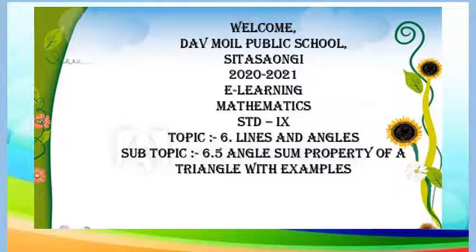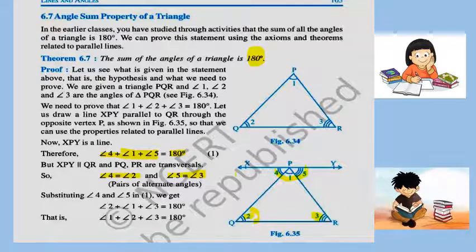Dear students, today in the lesson Lines and Angles, we will see the last topic of this lesson, that is the Angle Sum Property of a Triangle. You are already aware of the Angle Sum Property of a Triangle, but today we will see the theorem which is based on this property. In earlier classes we have studied, through activity and practical, that the sum of all angles of a triangle is 180 degrees. Now how to prove it?